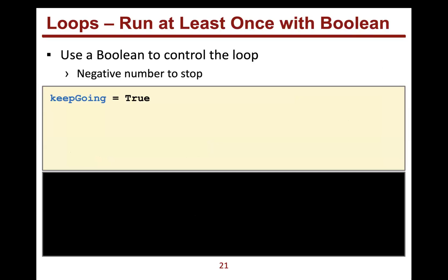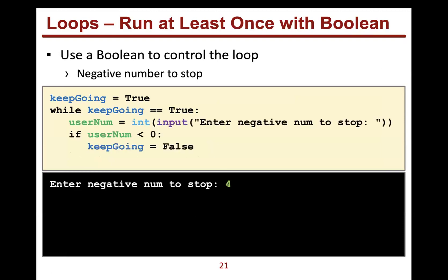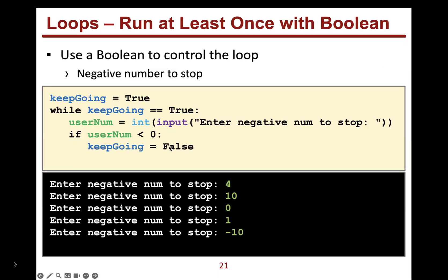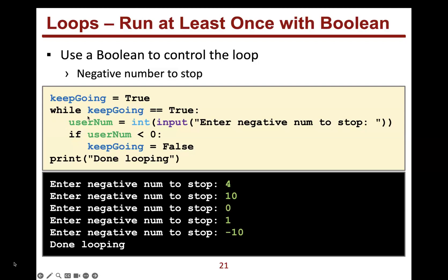Running at least once with a Boolean: create a variable keep_going = True, then while keep_going (or while keep_going == True). Get user input. If the number is less than zero, set keep_going to False. This approach works but is a bit more complicated and requires more code. You could just use the integer user_num directly in the condition instead of creating a separate Boolean variable.